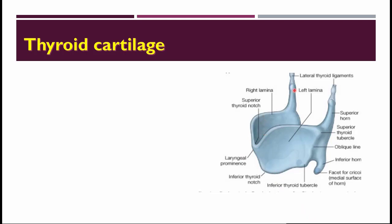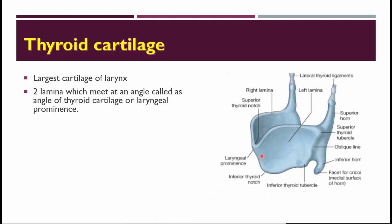Now let's understand each cartilage one by one. The first cartilage is the thyroid cartilage — it is the largest cartilage of the larynx and is shaped like a shield. Both laminae form a protective shield, deep to which lies the rest of the cartilaginous framework and cavity of the larynx.